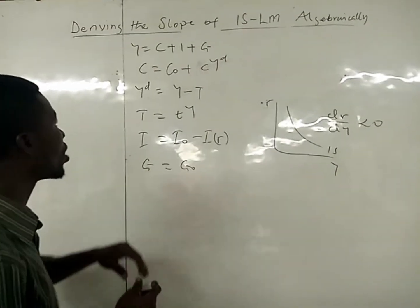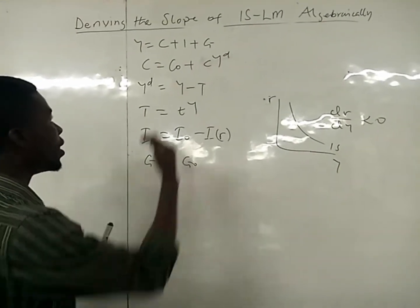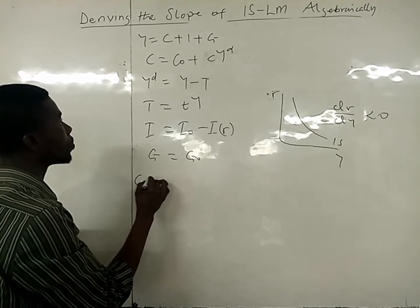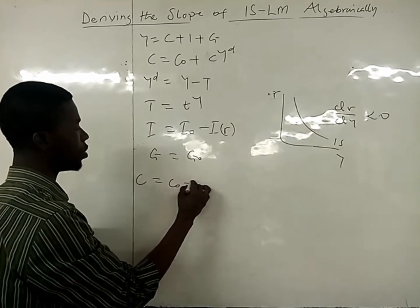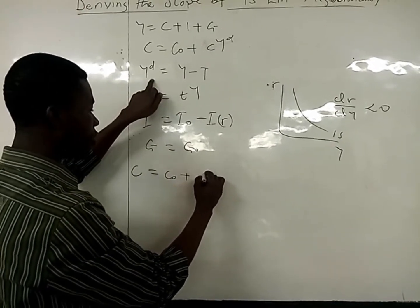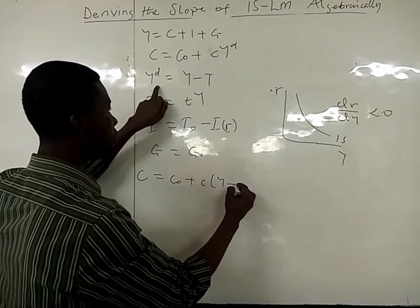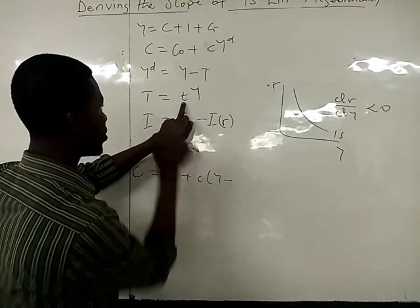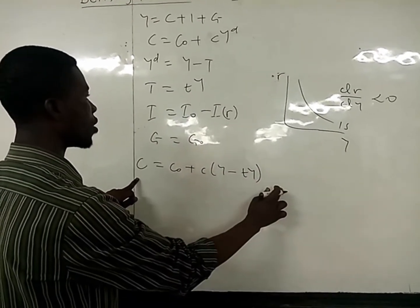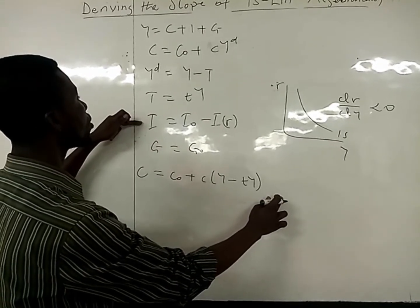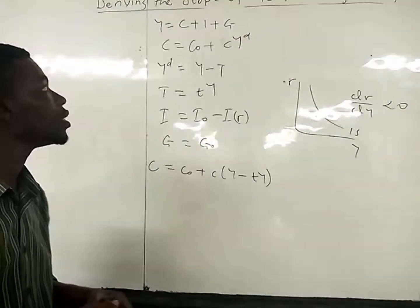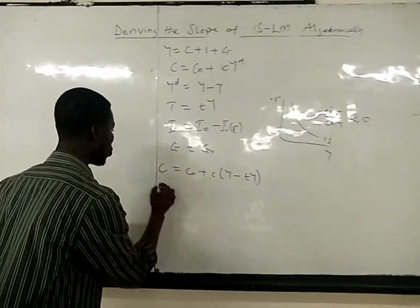So as we know the IS equation and its variables, the components in it: first, let's get our consumption. Our consumption will be C₀ plus the marginal propensity to consume times (Y minus T). Then we know what T is — T equals tY. The investment function is also here, and then government expenditure. We are putting them all into the IS equation.